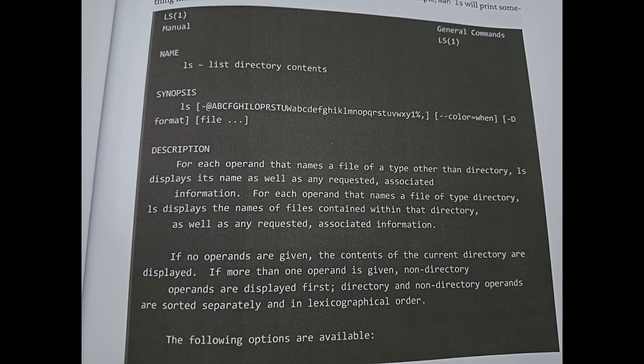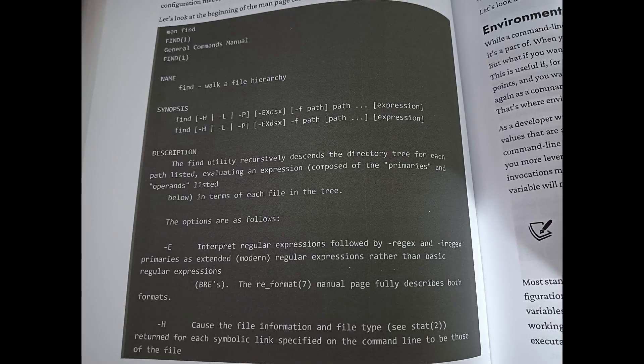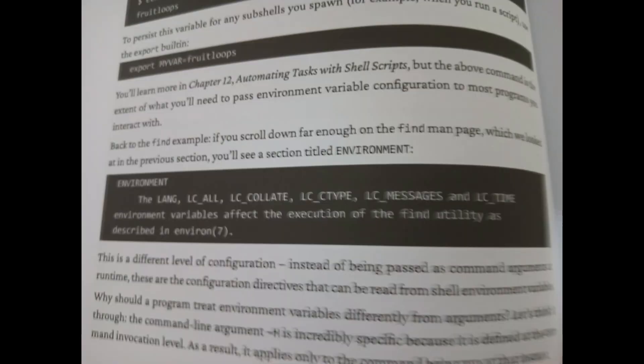However, I do have some concerns with some of the content in the book. For example, this book's title says 'Developer's Guide to Linux', but on pages 17, 118, and 120, where they show a man page, it's not the GNU man page — it's the man page from FreeBSD, which is the man page used on macOS. Is it that difficult to get a Linux man page for a Linux book?